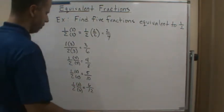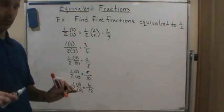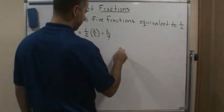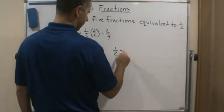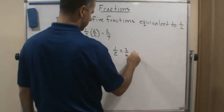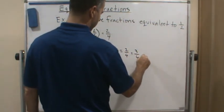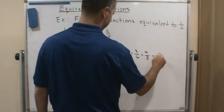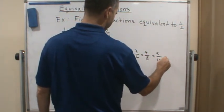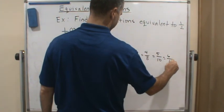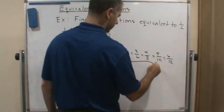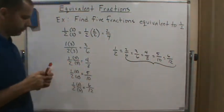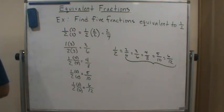And so 5 equivalent fractions to 1 half is going to be what? 2 fourths, 3 sixths, 4 eighths, 5 tenths, and 6 twelfths. And that's it.